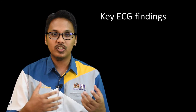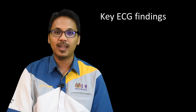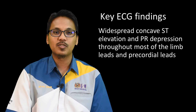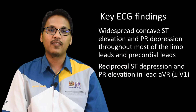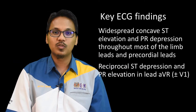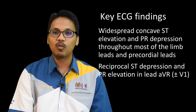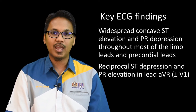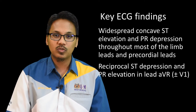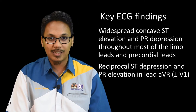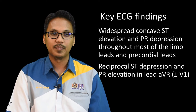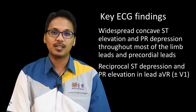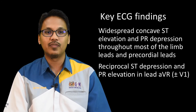What are the key ECG findings in pericarditis? You are expected to see widespread concave ST elevation and also PR segment depression throughout most of the limb leads — which are lead number one, two, three, AVL and also AVF — and also our precordial leads, which are chest leads from V2 until V6. We may also see reciprocal ST depression and PR elevation at lead AVR and plus minus lead V1.